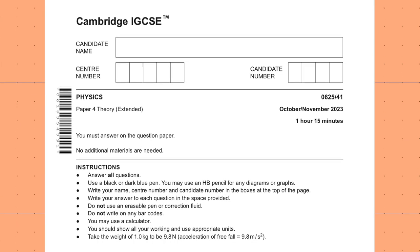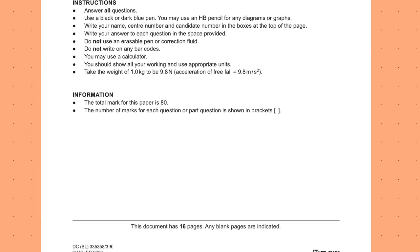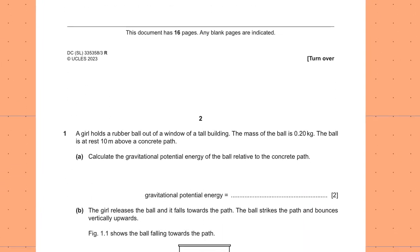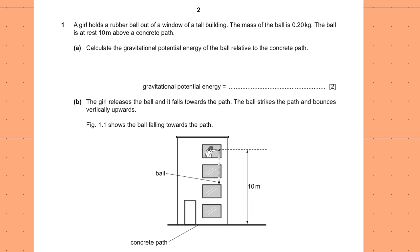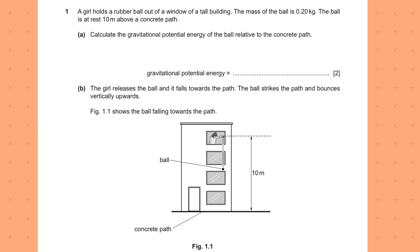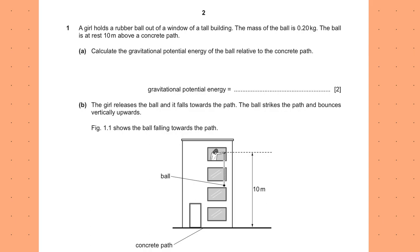So Winter 2023 Paper 41, this is live session number 6. Let's start with the first question. A girl holds a rubber ball out of a window of a tall building.